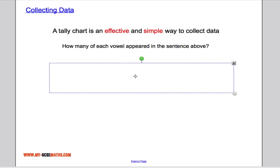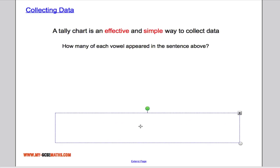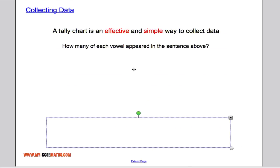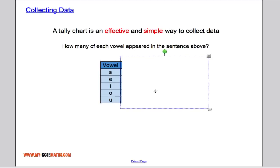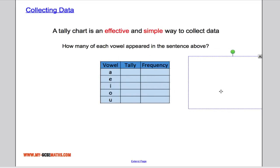Now a tally chart is a really effective and simple way to collect data. Very efficient, very simple and useful. So suppose I want to work out how many vowels appeared in the sentence above, I can use a tally chart. So I've set it up like this, we've got the vowels in this column here, tally and then a frequency, so how often it appears.